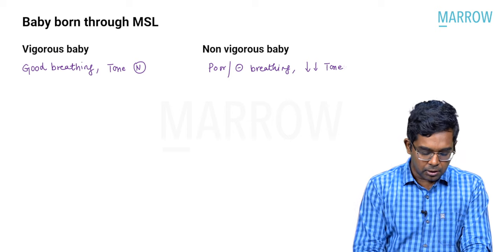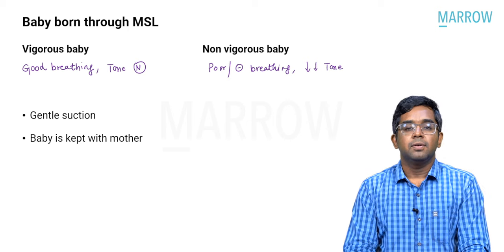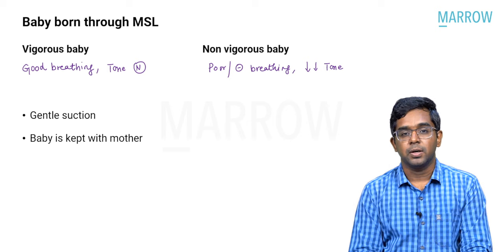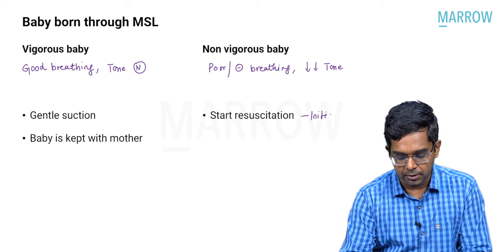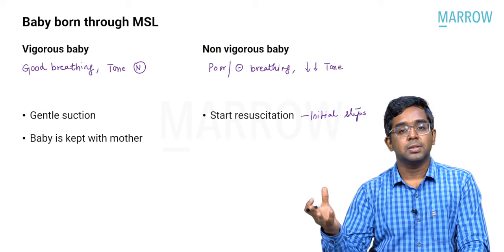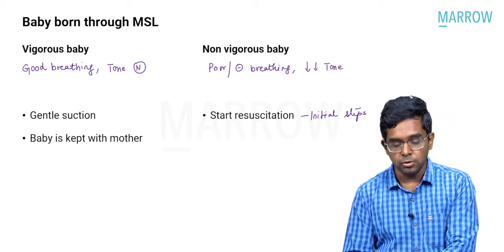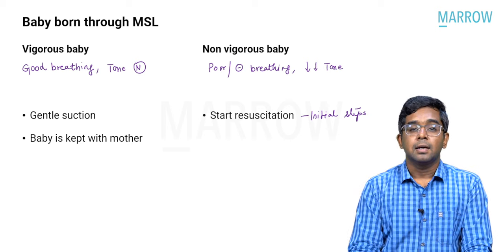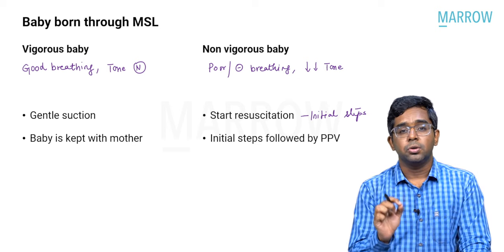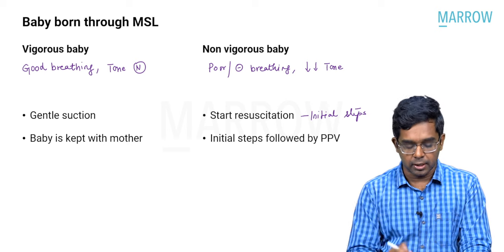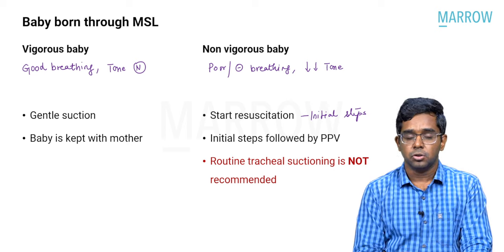Guidelines state that for a vigorous baby, perform gentle suction of the mouth and nose and keep the baby with the mother — nothing else is required. For a non-vigorous baby, resuscitation is required, starting with the initial steps: positioning, suctioning, stimulation, and keeping the baby under a warmer. A very important point: routine tracheal suctioning after birth in these babies is NOT recommended.